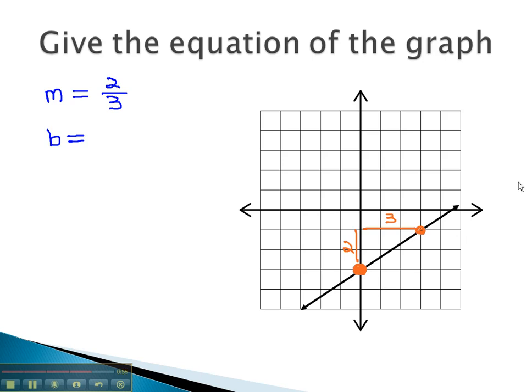The y-intercept is where the graph crosses the y-axis. In this case, it crosses the y-axis at negative 3. The y-intercept is negative 3.